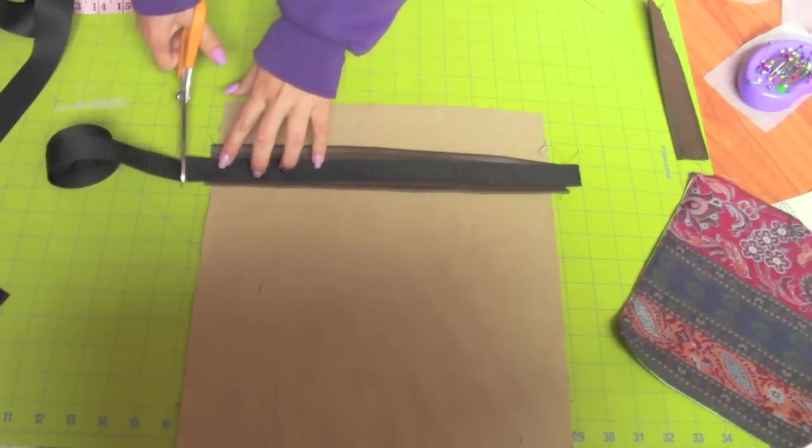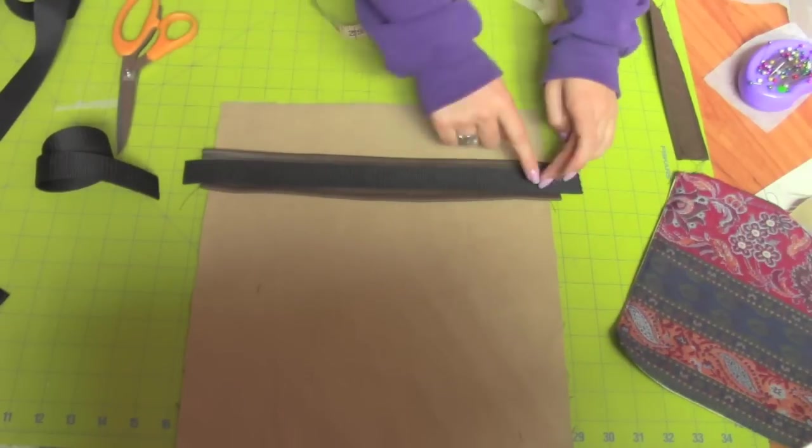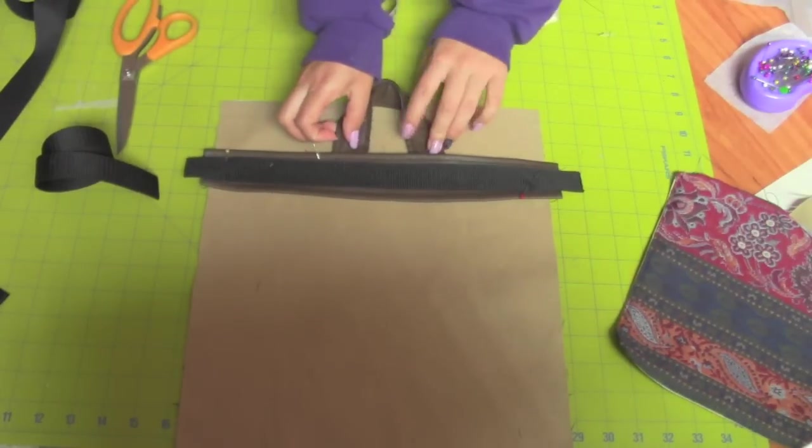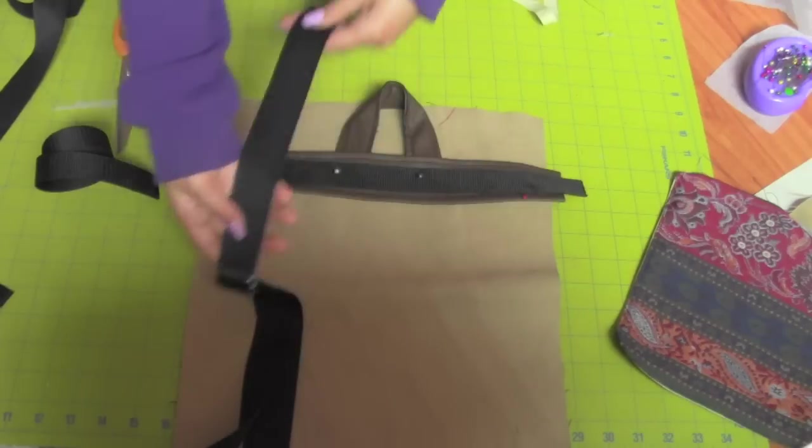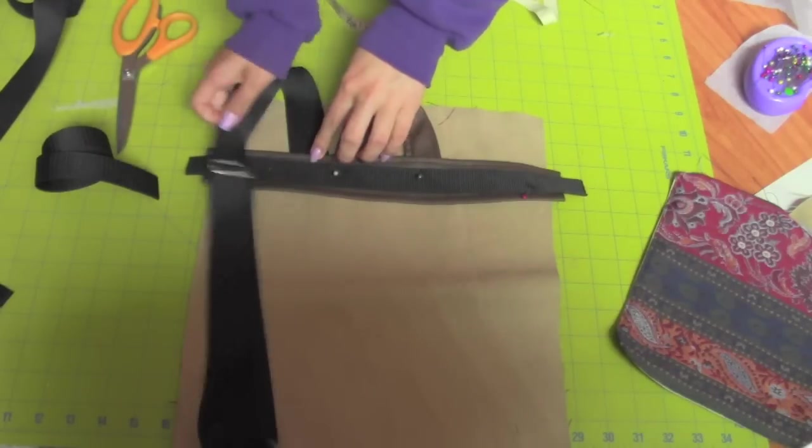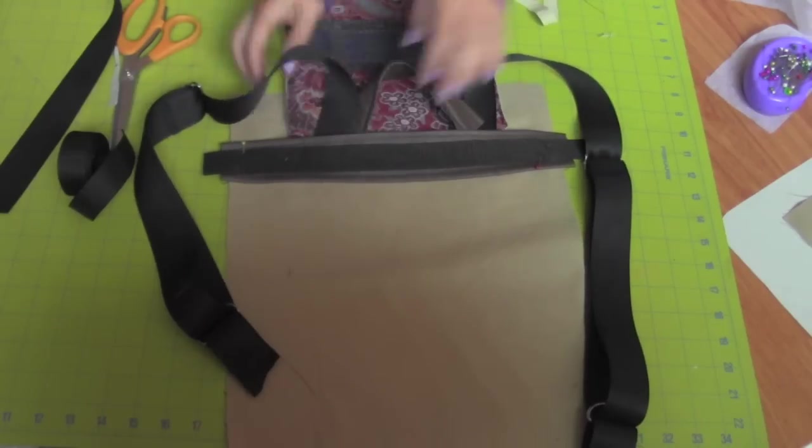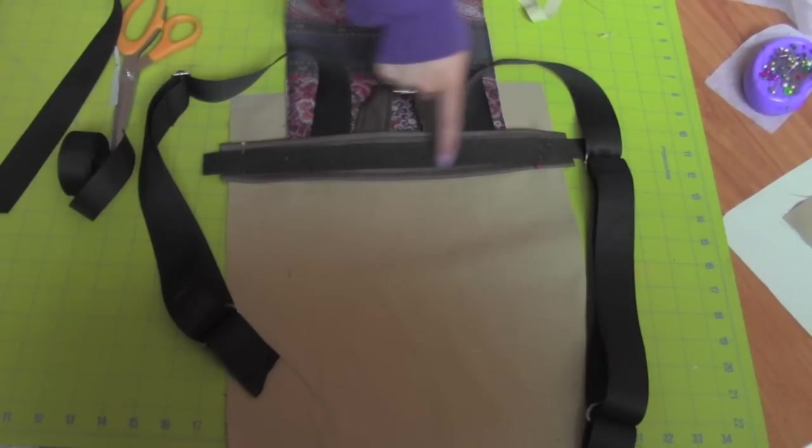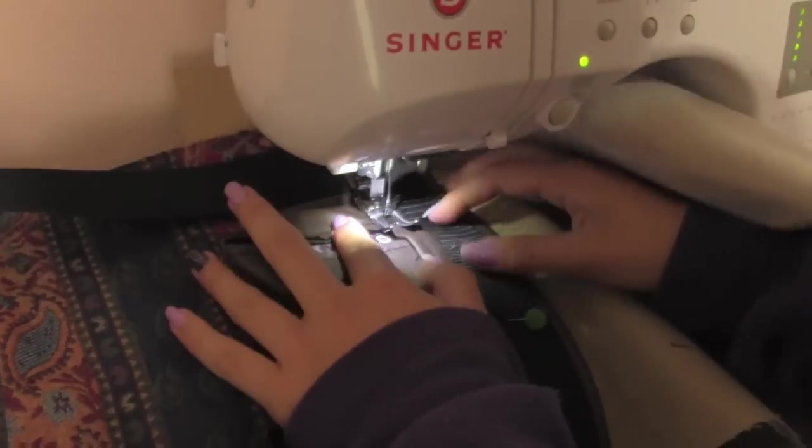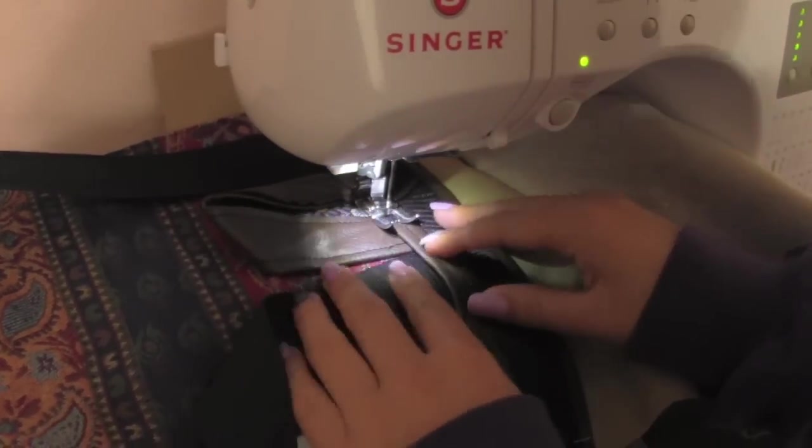Place the strap material on top of the vinyl an inch and a half from the top. Place the handle right in the middle and place the straps on the sides of the handles and place the flap right under. Sew it down on both sides using a wide stitch length.